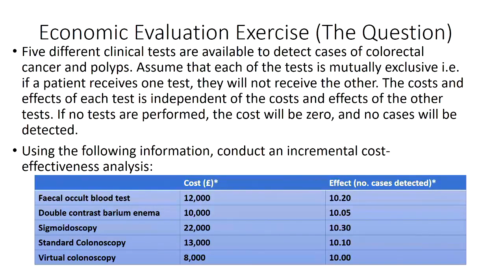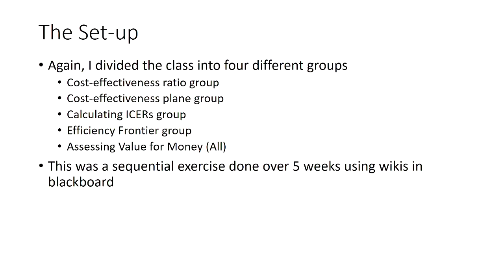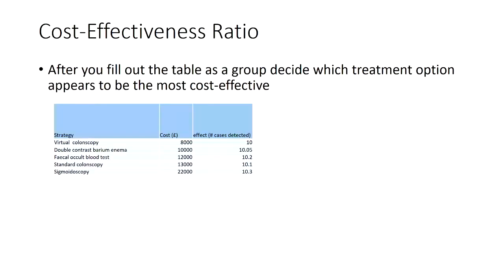The next exercise is an economic evaluation exercise. It uses made-up numbers and effects, and since it's an oncology course, it relates to cancer. Specifically, it looks at five different tests to detect colorectal cancer and has students carry out different aspects of economic evaluation. They do an incremental cost-effectiveness analysis together. The class divides into groups responsible for: estimating a cost-effectiveness ratio, plotting a cost-effectiveness plane, calculating ICERs, drawing an efficiency frontier, and assessing value for money.